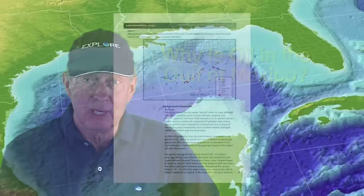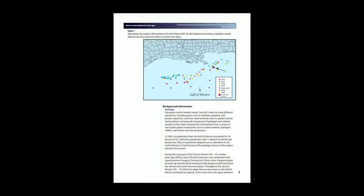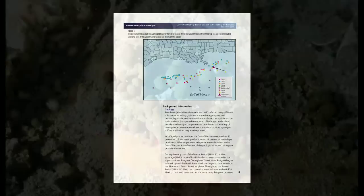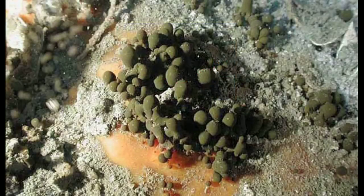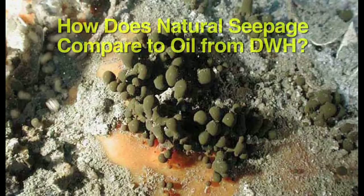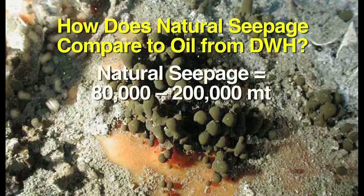This information is presented in the Geology Keynote address and the Geology section of the Educator's Guide. Be sure to highlight the fact that there are many places where hydrocarbons are seeping into the Gulf through the seafloor, and that these places are known as cold seeps. Your students may be curious about how this natural leakage compares to the amount of crude oil that escaped from the Deepwater Horizon wellhead. In 2003, the National Research Council estimated that the amount of oil seeping into the entire Gulf of Mexico ranges from 80,000 to 200,000 metric tons per year.